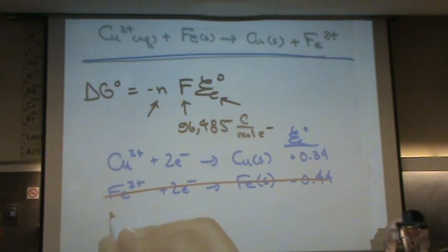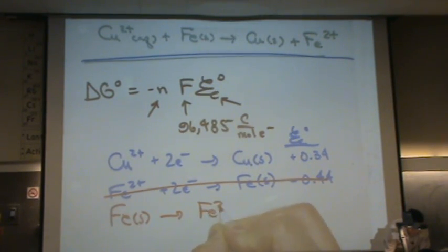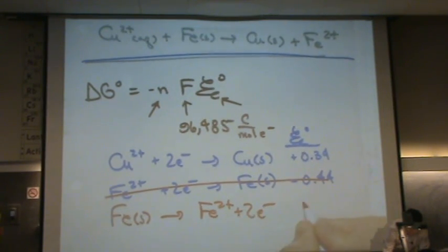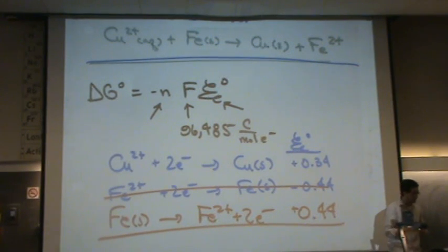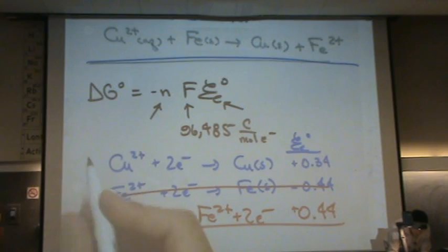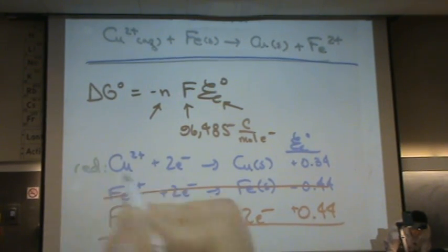So this one has to be flipped, and that will cause me to have iron solid, just writing it backwards, to iron two plus plus two electrons, positive 0.44. And there's my, we label these, I've got my reduction and my oxidation.